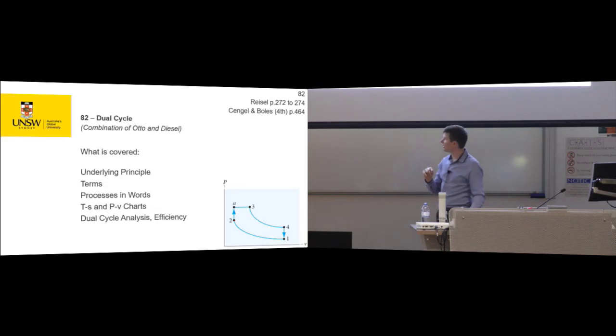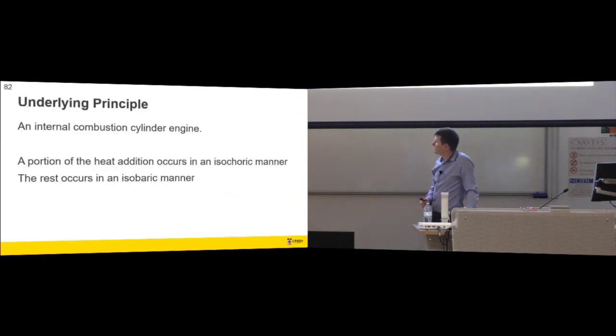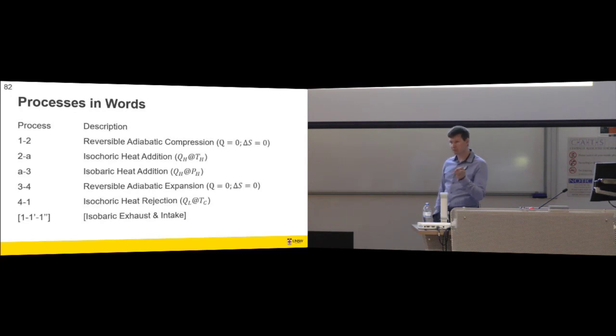In reality, maybe there's a curve or maybe there's a spike and up, but if we just take these two, then we can get better agreement between our analysis and our real cycle. So it's not an auto, it's not a diesel, it's a mathematical construction of the both of them to try and get closer to an internal combustion engine. So a portion is isochoric and the rest is isobaric. There's five processes. So a thermodynamic cycle doesn't have to be four processes. This one's five.